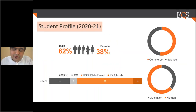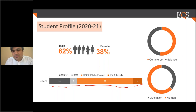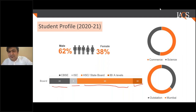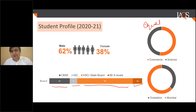Looking at the current student profile: it leans slightly towards male but we have students across all boards and international students studying as part of the program. There are many outstation students, and the split between commerce and science backgrounds is almost equal — equal numbers from both streams.